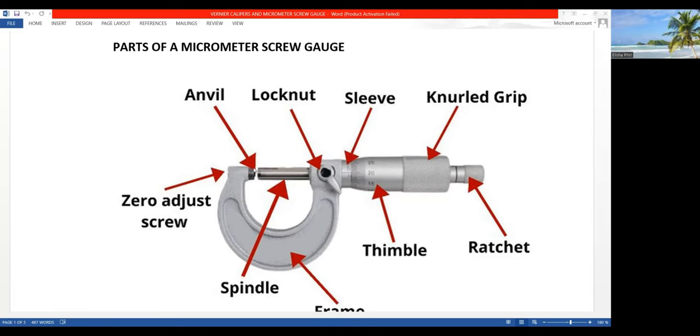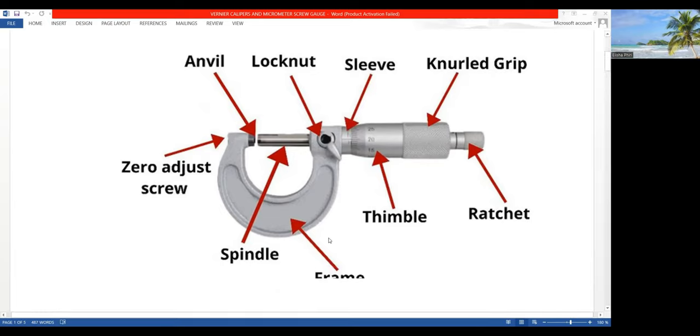Then there's a lock nut, an anvil, and a spindle. Take note of these parts because as we answer some questions, I will actually be mentioning all these parts. Then we have the zero adjust screw, and then there's a frame. This is called the frame.